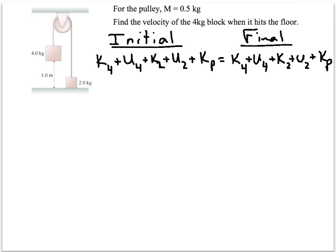Now, let's go through and see what is going to be zero. Initially, nothing's moving, so all of our kinetic energies are zero, and our 2 kilogram block is on the floor, so its gravitational potential energy is zero. Afterwards, everything's moving, so all of our kinetic energies are going to be present, and the 4 kilogram block will be on the floor, so its gravitational potential energy is zero.